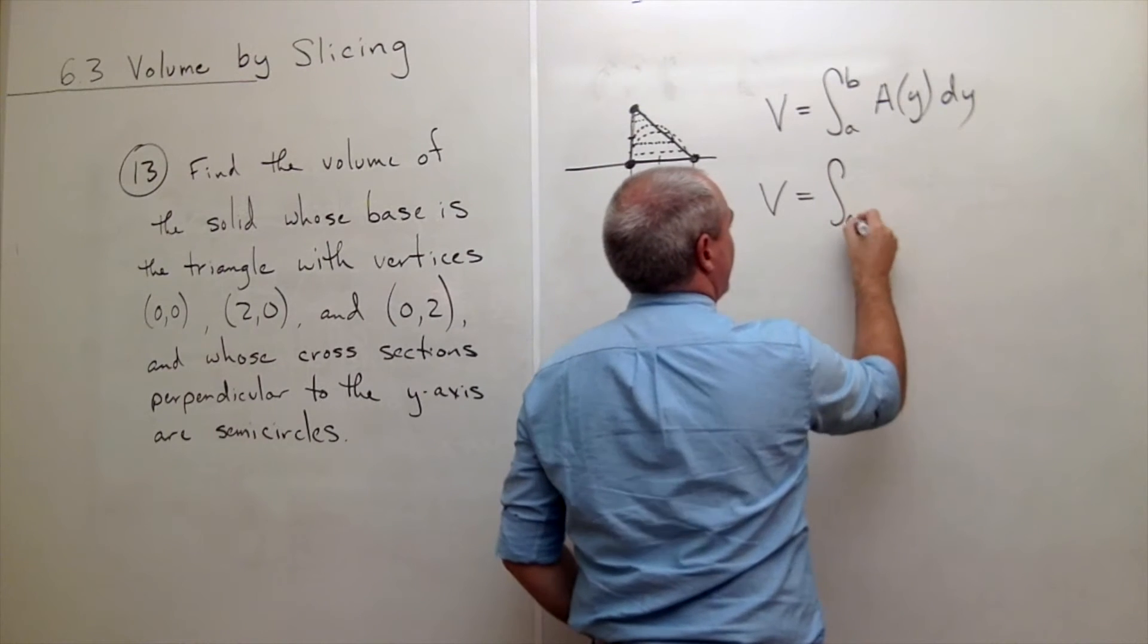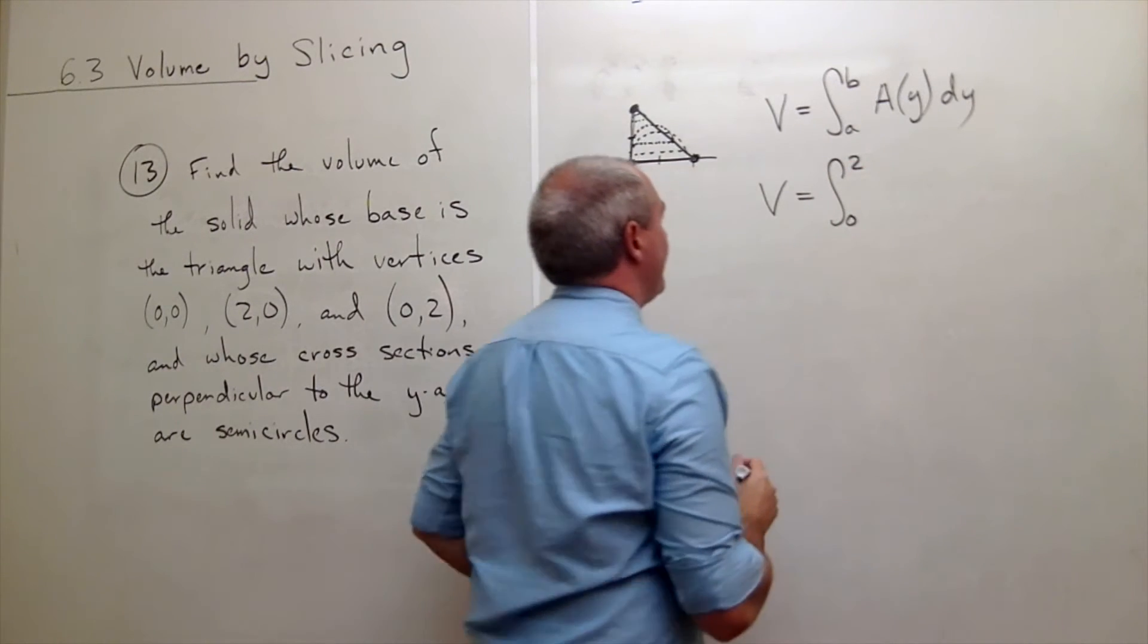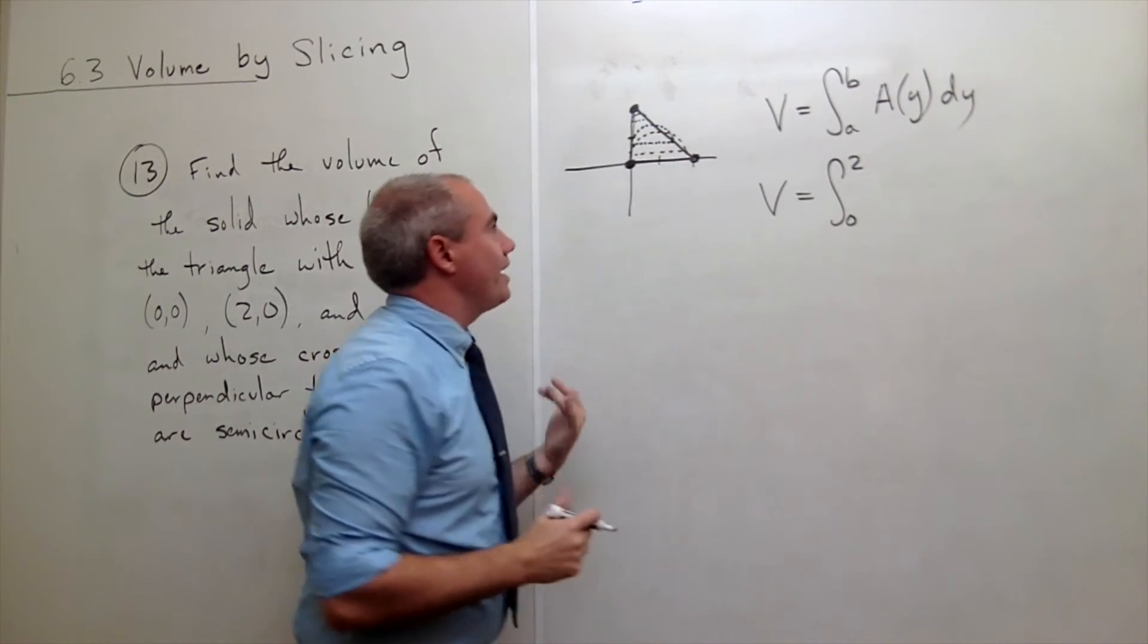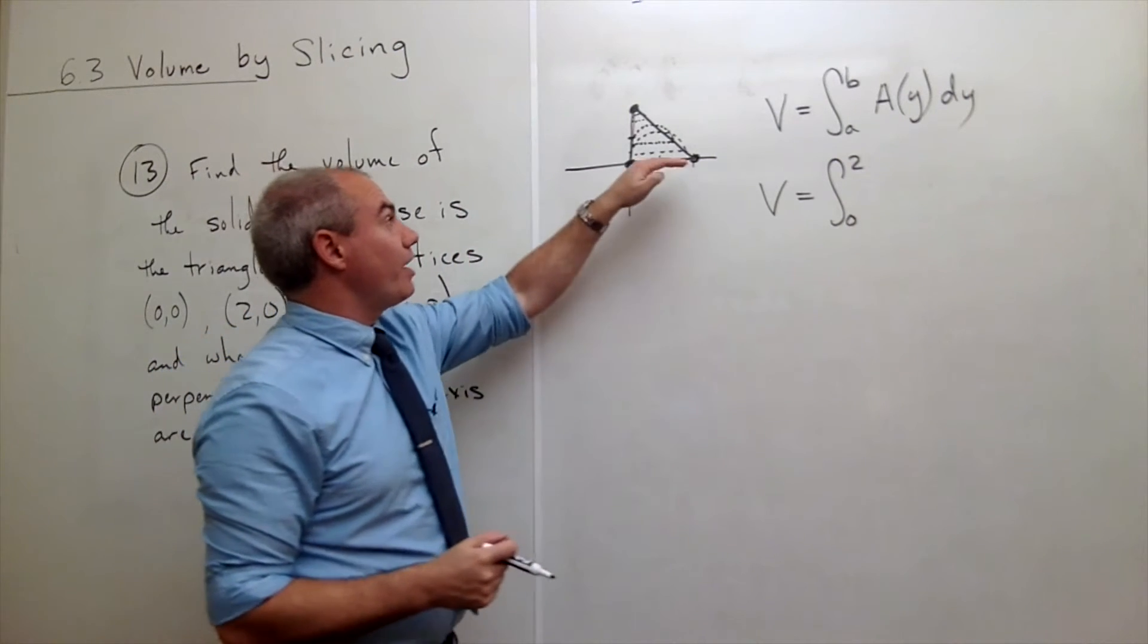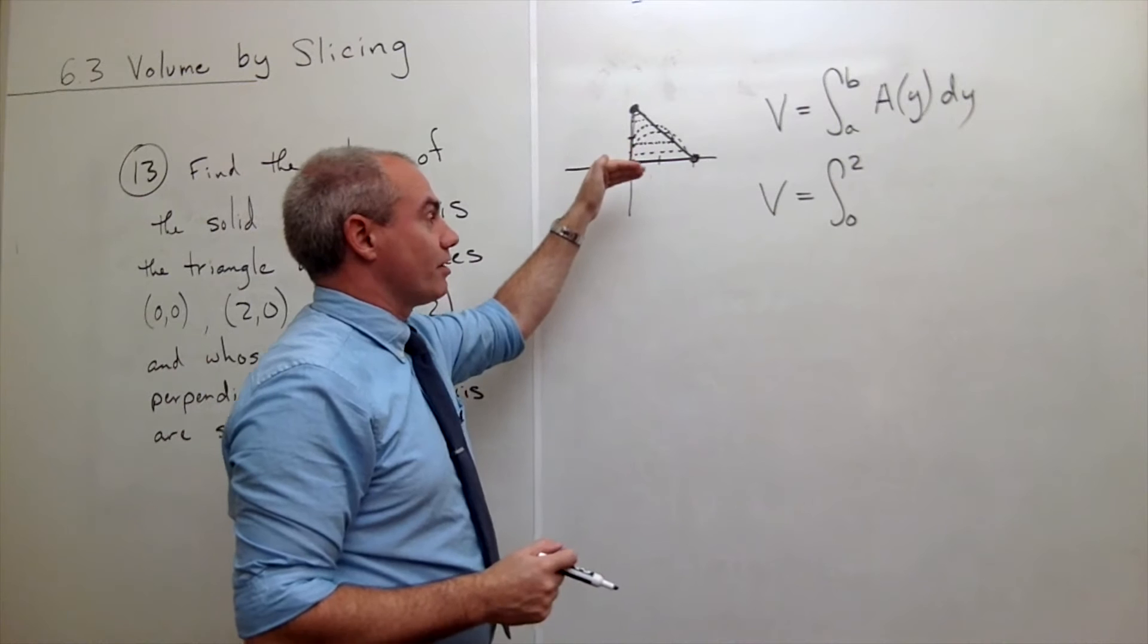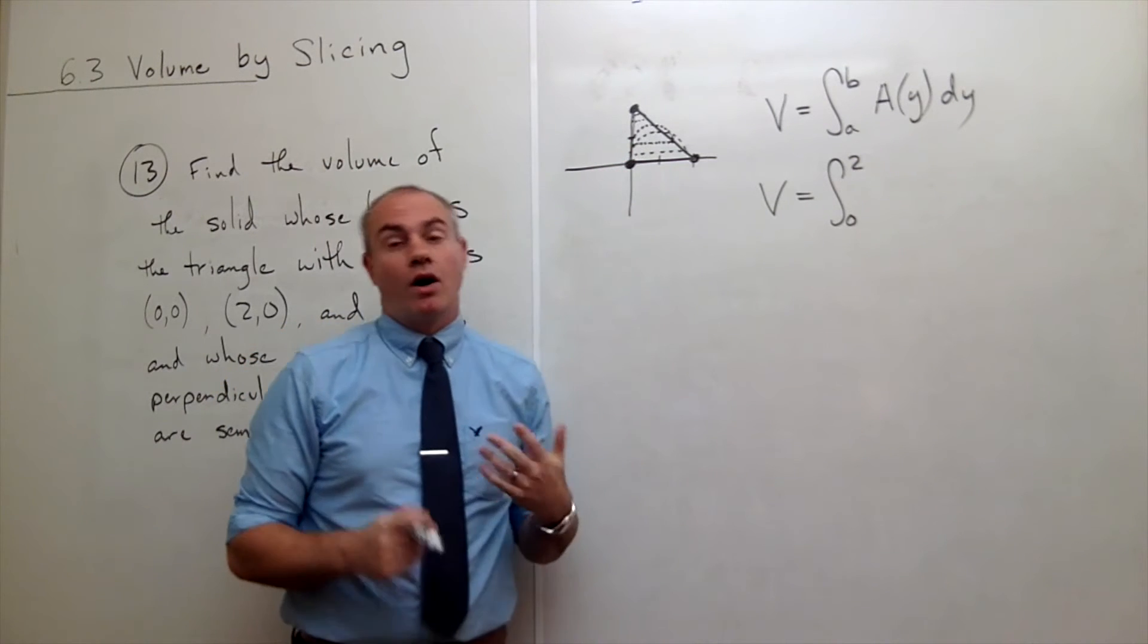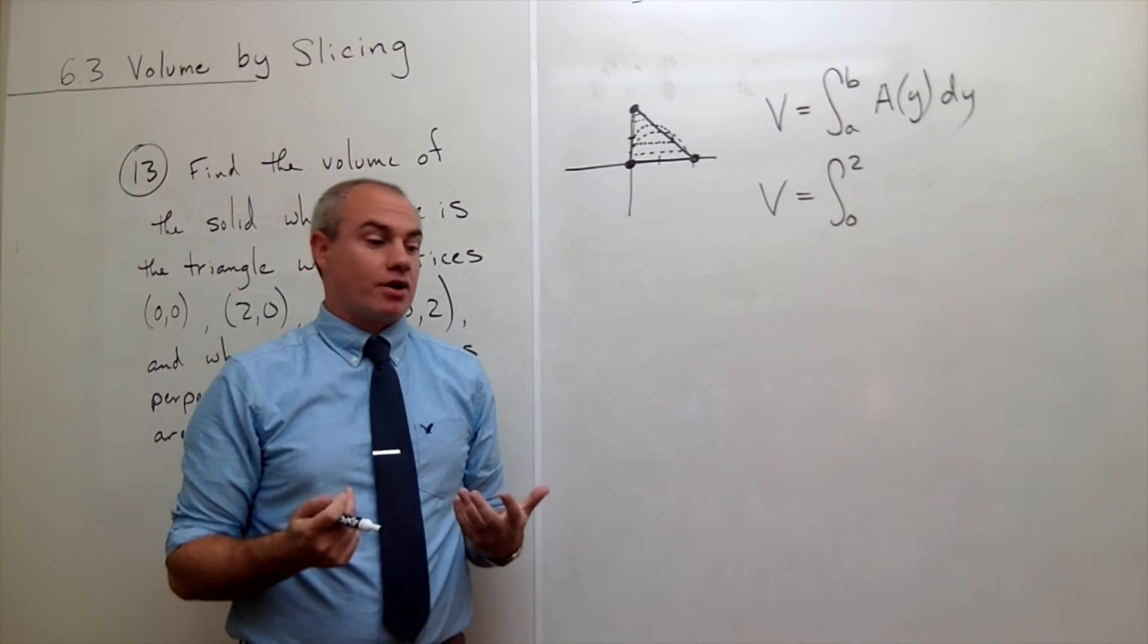So we're integrating this thing from zero to two. And then the next question is, well what is the cross-sectional area here? Well cross-sectional area in this case is a semicircle. So I need to know, all right then what is the equation of a semicircle?